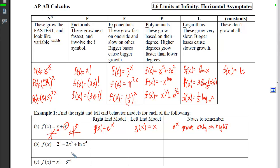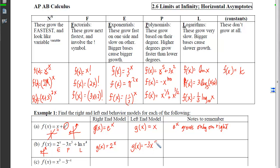On the left side, 2^x is no longer growing — it's super flat. So now we compare the polynomial to the log. Since polynomials come before logs in the growth hierarchy, the polynomial dominates on the left. The left-end behavior model is g(x) = -3x^5. Note that the log term never comes into play — logs grow slow. And remember that 2^x grows on the right.